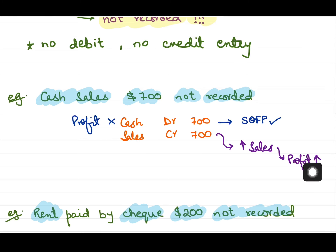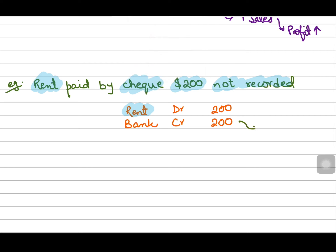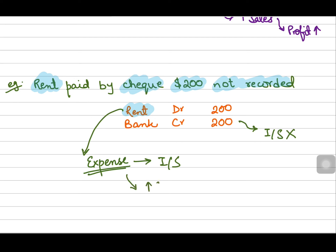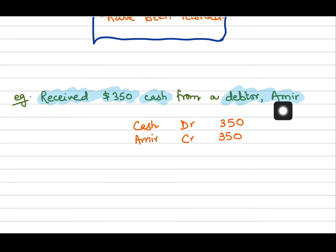In the second example, we forgot to record the rent paid through check. Bank doesn't become part of your income statement, so it will not affect the profit. However, rent is an expense shown in the income statement. By debiting an expense — recording the payment of an expense — I am increasing my expense. If the expense is increasing, it will decrease my profit, because expenses have an indirect relation with profit.